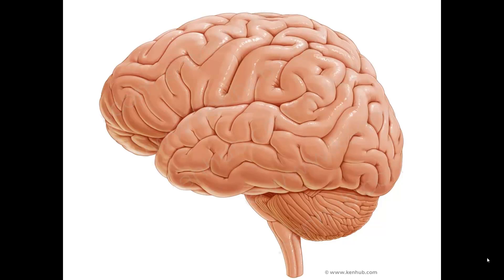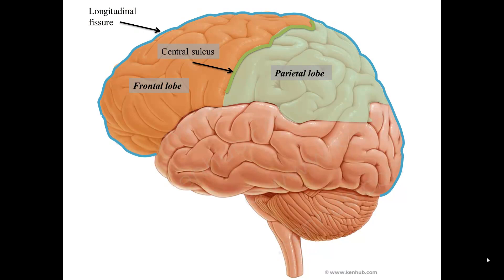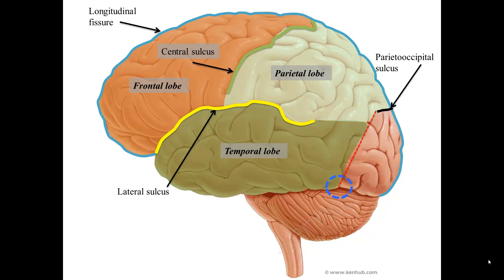Recall that the cerebrum is divided into right and left hemispheres by the longitudinal fissure, and that the central sulcus divides the frontal and parietal lobes, while the lateral sulcus divides the frontal and parietal lobes superiorly from the temporal lobe below. The parietal occipital sulcus, along with an imaginary line drawn to the occipital notch of the cerebrum, separates the parietal and temporal lobes from the occipital lobe.